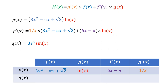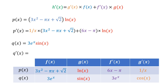Similarly, to find the derivative of q, we know that the two functions being multiplied are 3e to the x and sine of x. Then we need to figure out their derivatives, which are 3e to the x and cosine of x. Next, we put these together following the product rule. We multiply g prime, which is cosine of x, by f, which is 3e to the x. Then we add to that f prime, which is 3e to the x, multiplied by g, which is sine of x.